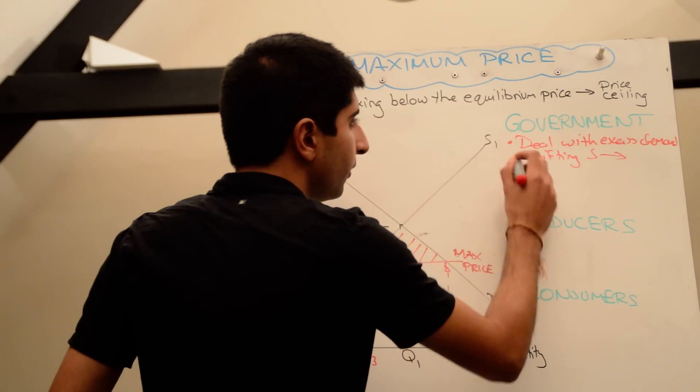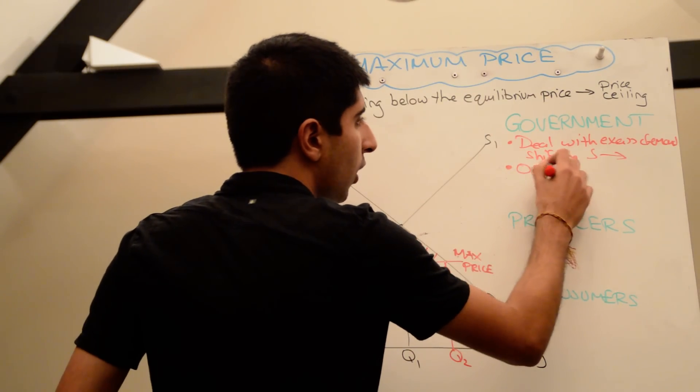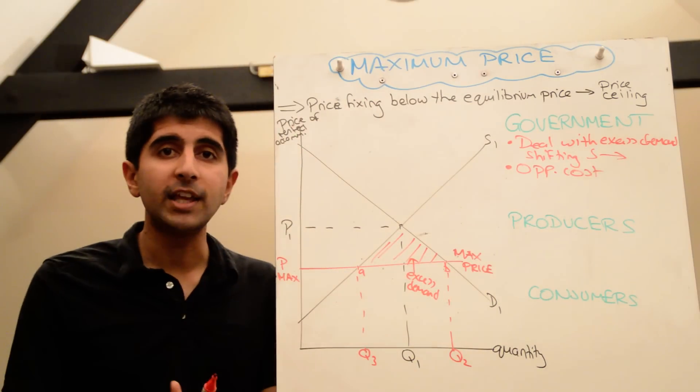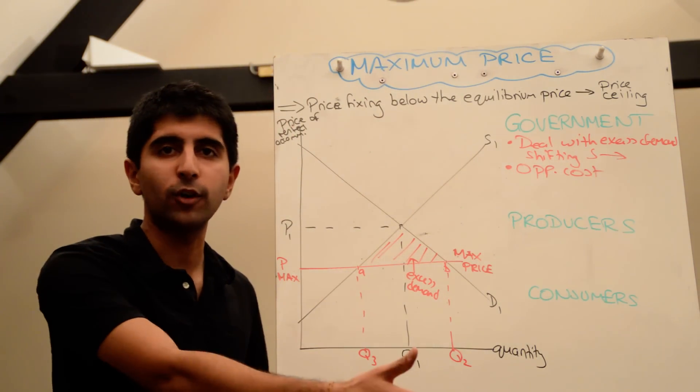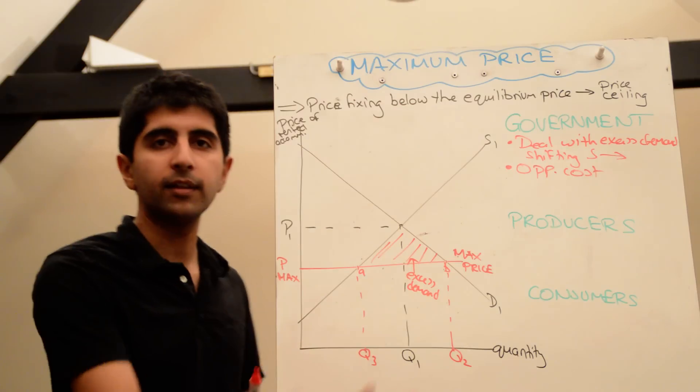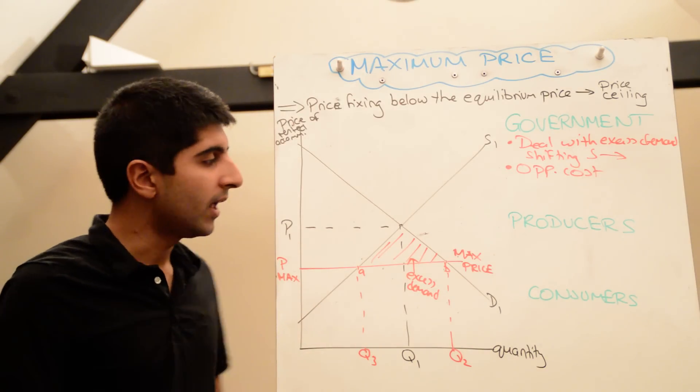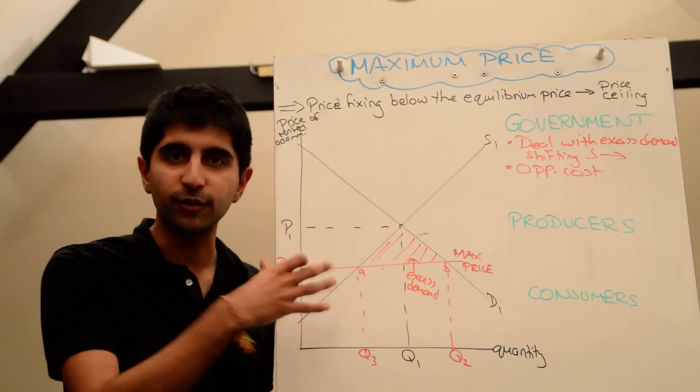But the problem with doing that and imposing a subsidy is there is a huge opportunity cost. So if the government decides to subsidize, could that money have best been spent elsewhere in the economy? Maybe on education, maybe on healthcare, maybe on infrastructure development. Maybe there were better uses of that money instead of trying to solve the problem that the government has caused itself.